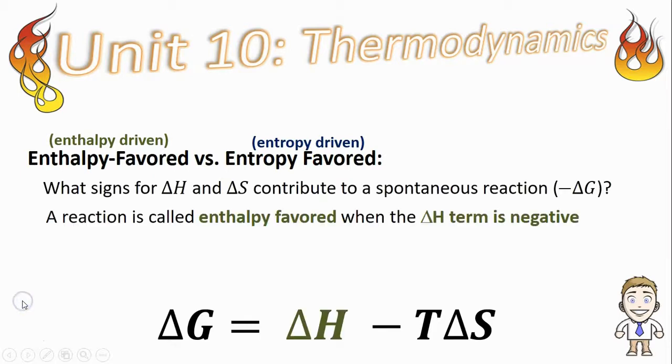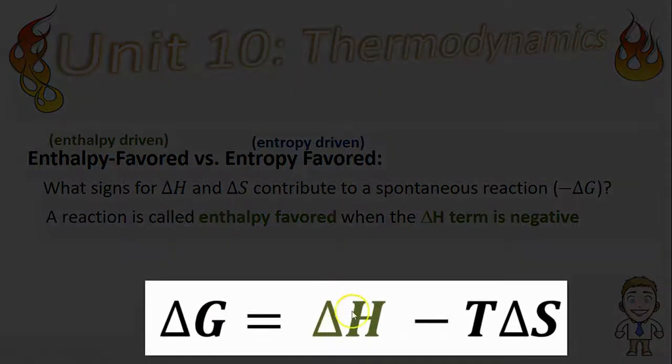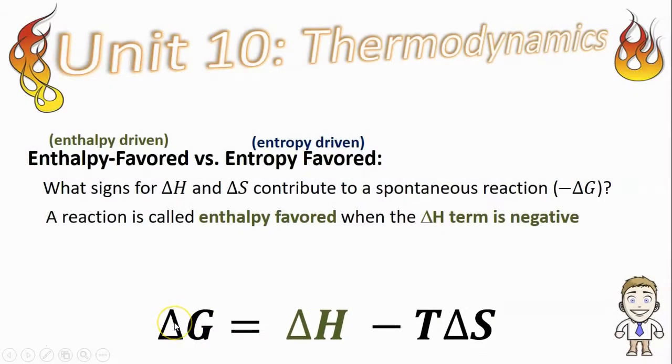...then it should make sense that a reaction is enthalpy favored whenever that delta H term is negative. You can imagine plugging in a negative number for delta H that's going to weigh pretty heavily on helping the delta G to also be negative.